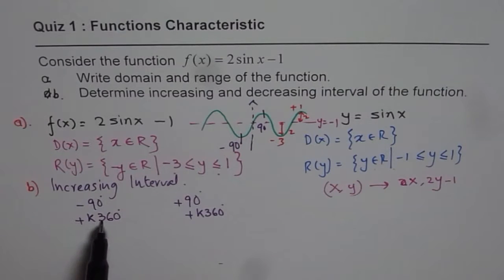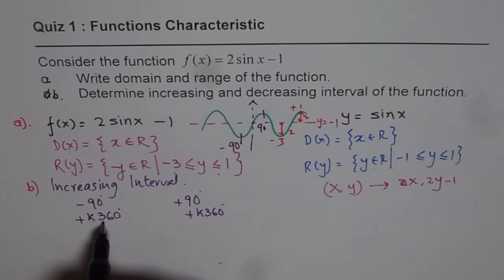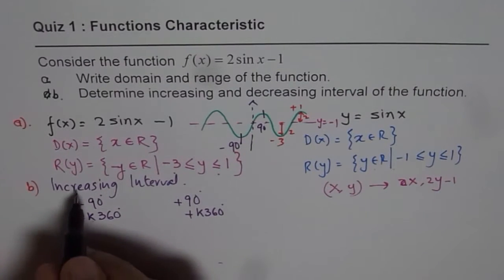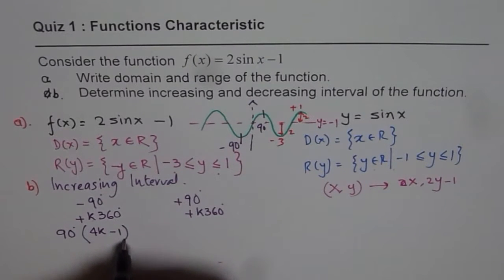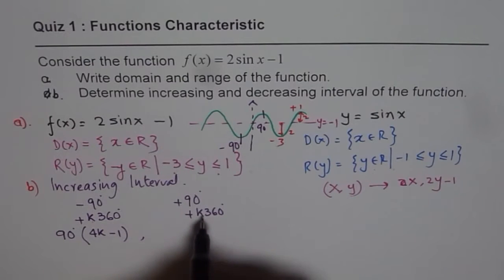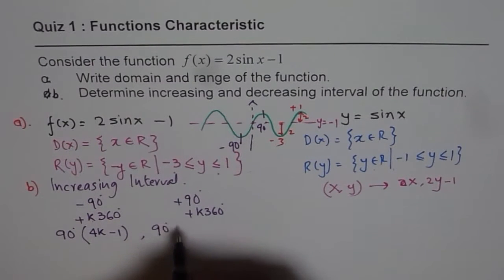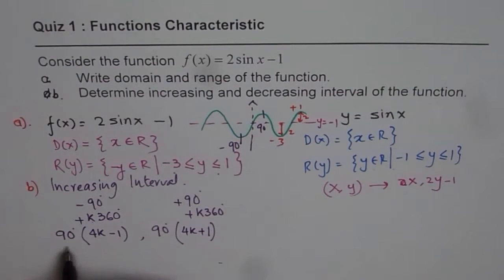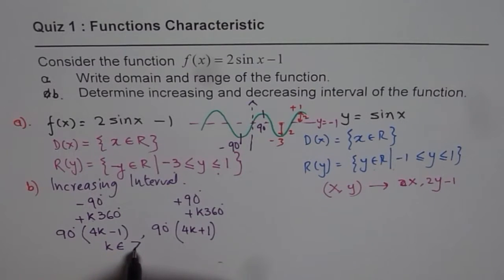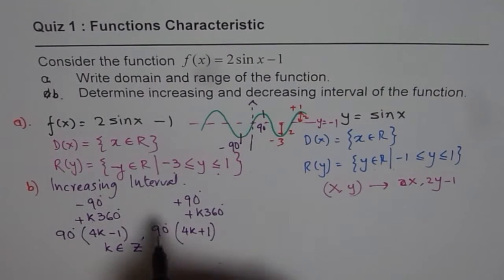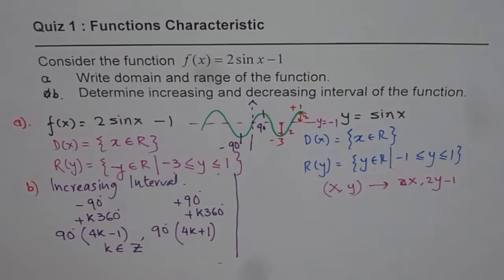We can write the increasing interval by factoring out 90°. Taking 90 common: the lower bound becomes 90·(4k − 1) and the upper bound becomes 90·(4k + 1), where k belongs to the integers. That is the general increasing interval for this function.